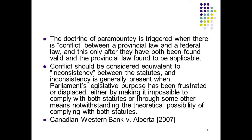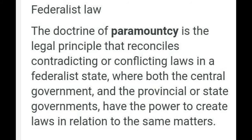Step four: inter-jurisdictional immunity applicability. You're going to assess the applicability of the law to the entity, person, or thing regulated by the other level of government. Ask whether this law encroaches on the protected core of a federal or provincial competency. Look at the basic, minimum, unassailable core content — the very core — and interpret narrowly the minimum content necessary to make the power effective for the purpose for which it was conferred. This should impact a vital and essential part of the undertaking or power. Then ask whether the effect of the provincial law is sufficiently serious to invoke this doctrine. There must be impairment for inter-jurisdictional immunity applicability to apply.